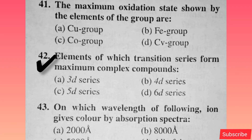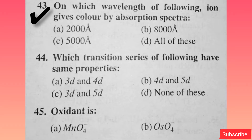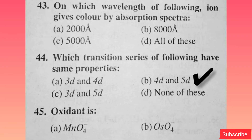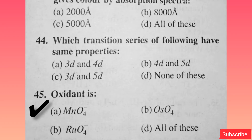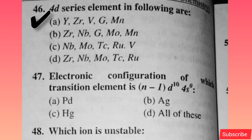The maximum oxidation state shown by the elements of the group — option B is correct. Elements of which transition series form maximum complex compounds? Option A is correct — 3D series. On which wavelength does the following ion give color by absorption spectra? Option C is correct. Which transition series have the same property? Option B is correct. Oxidant is — option A is correct. 4D series elements — option D is correct.